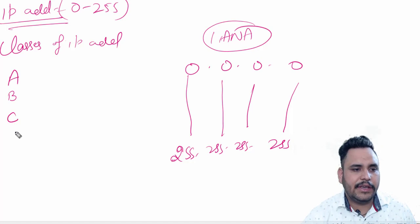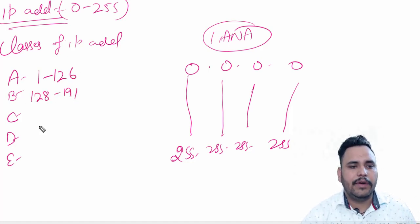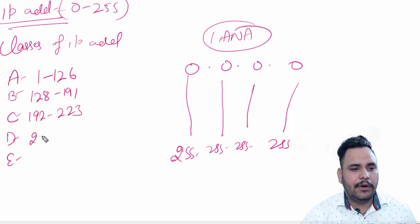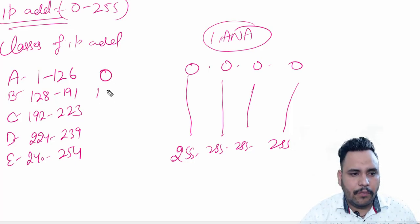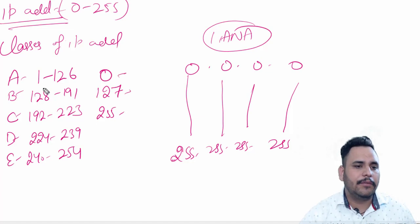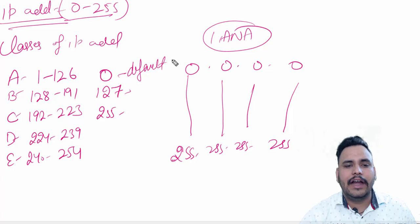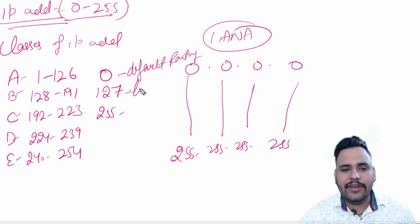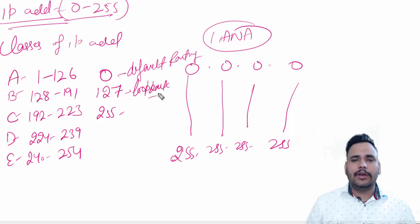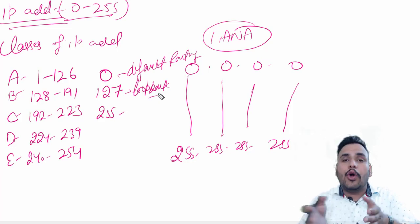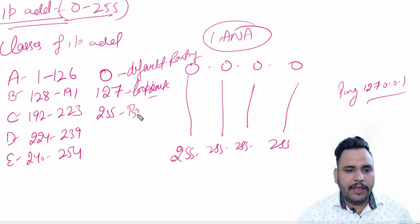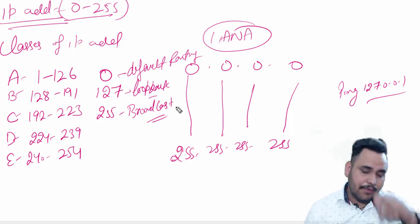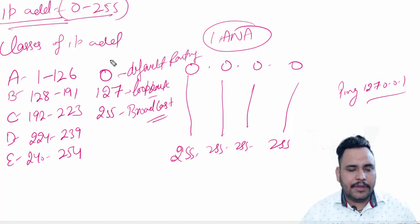The five classes are: A class, B class, C class, D class, and E class. The range of A class is 1 to 126, B class is 128 to 191, C class is 192 to 223, D class is 224 to 239, and E class is 240 to 254. So 0, 127, and 255 are missing from the usable range. 0 is reserved for the default route, 127 is your loopback address — for example, if your PC wants to ping its own LAN card, we ping 127.0.0.1 — and 255 is reserved for broadcast.